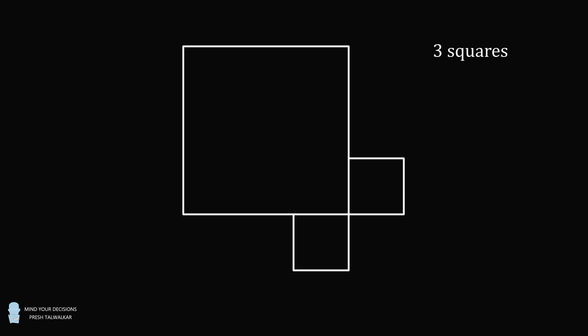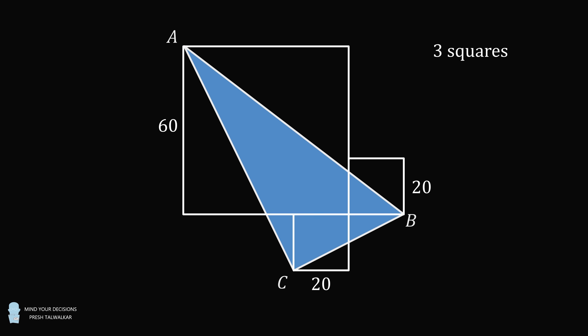Problem 2. There is a large square, and on its bottom right corner are two squares that are attached externally and diagonally. The large square has a side length equal to 60, and each of the small squares has a side length equal to 20. Construct a triangle from the top left corner of the large square, the bottom right corner of the square that's on the right side, and the bottom left corner of the small square on the bottom side. Call this triangle ABC. What is the area of triangle ABC?